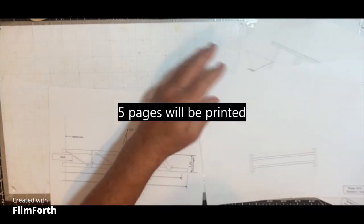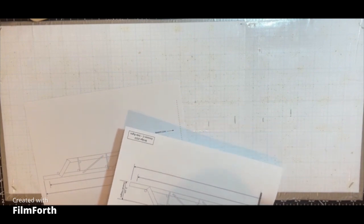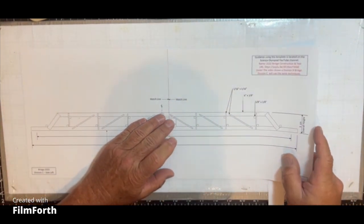Now these are the six pages that were printed out. You can see I'm sorting them out and looking for the front view, and I've trimmed along the cut line to build up the front view of the template.